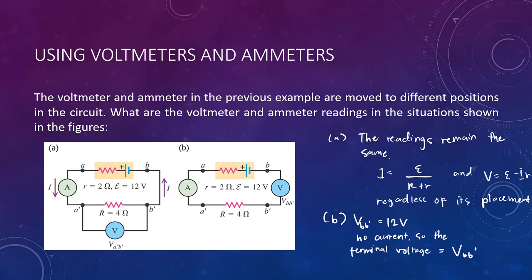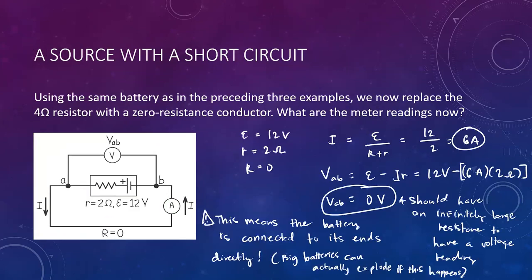Short circuit example: replace the 4 Ω resistor with a zero-resistance conductor. Now I = EMF/(0 + r) = 12/2 = 6 A. The terminal voltage V = EMF − Ir = 12 − (6)(2) = 0 V. A voltmeter should have infinitely large resistance to give a voltage reading. In a short circuit, the battery is connected directly to its own terminals. Larger batteries can actually explode if this happens — for example, cell phone batteries that have exploded have had their chemicals mix, and there are ways to prevent this.